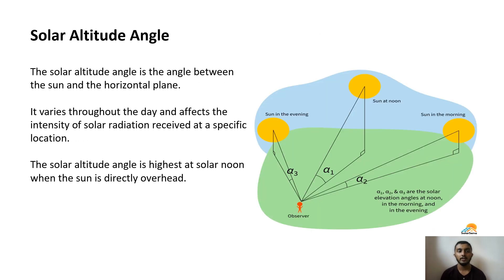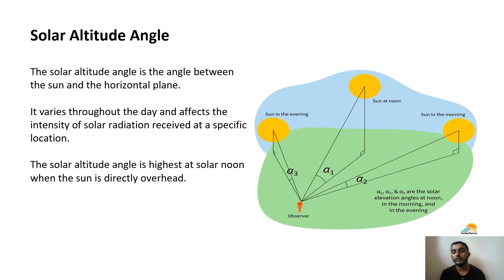The solar altitude angle is the angle between the sun and the horizontal plane. It varies throughout the day and affects the intensity of solar radiation received at a specific location. The solar altitude angle is highest at solar noon when the sun is directly overhead. Here you can see the altitude angle.